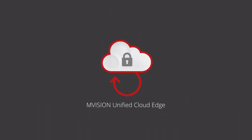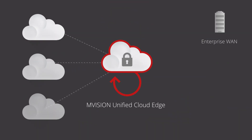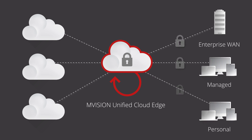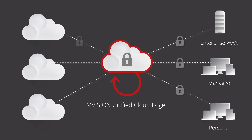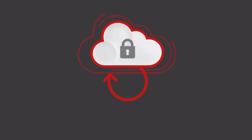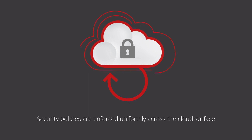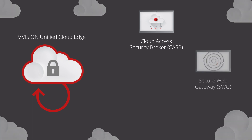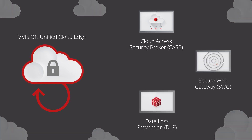McAfee's Unified Cloud Edge protects enterprise data and defends from threat where modern work gets done – on the device, in the cloud, and in between. It provides customers with a single place to set up security policies that are then enforced uniformly across the entire cloud surface and any device, with converging capabilities previously found in disparate platforms – CASB, Secure Web Gateway, and DLP.